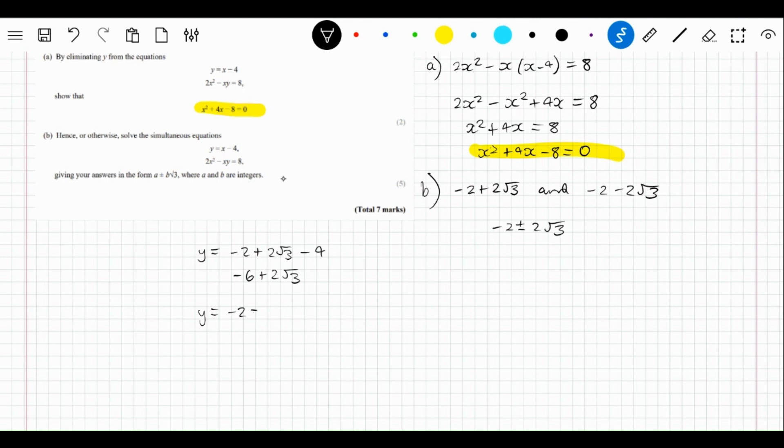That gives us a minus version, so we get minus 6 minus 2 root 3.